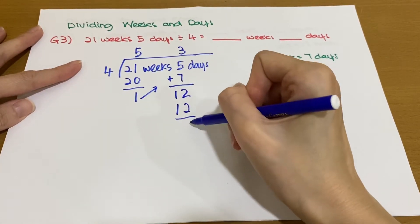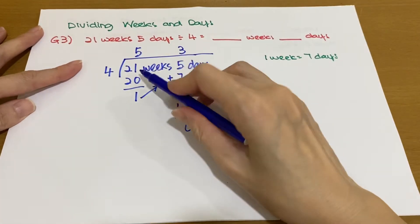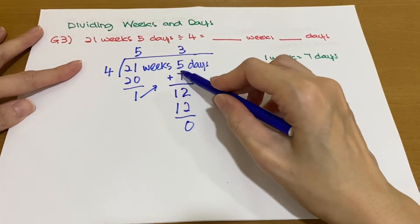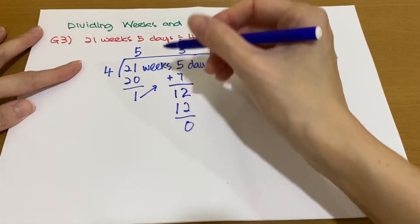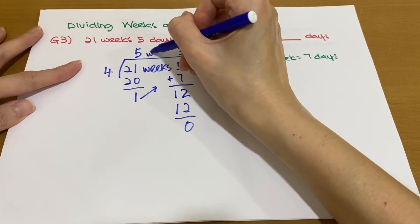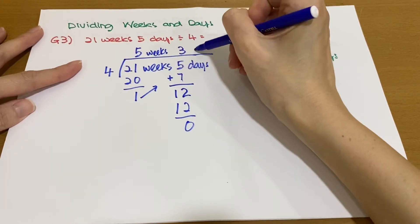So 21 weeks 5 days divided by 4 gives us 5 weeks and 3 days.